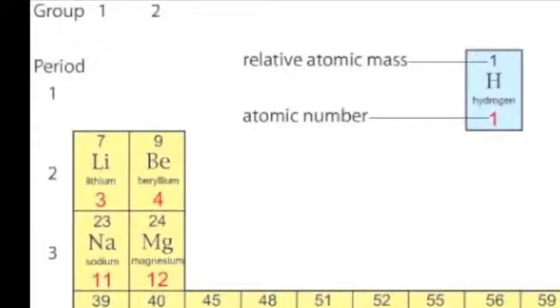There are several connections between an element's electronic configuration and where it is found on the periodic table. For example, the number of occupied shells is the same as the period number. Apart from the elements in group 0, which all have full outer shells, the number of outer electrons is the same as the group number.